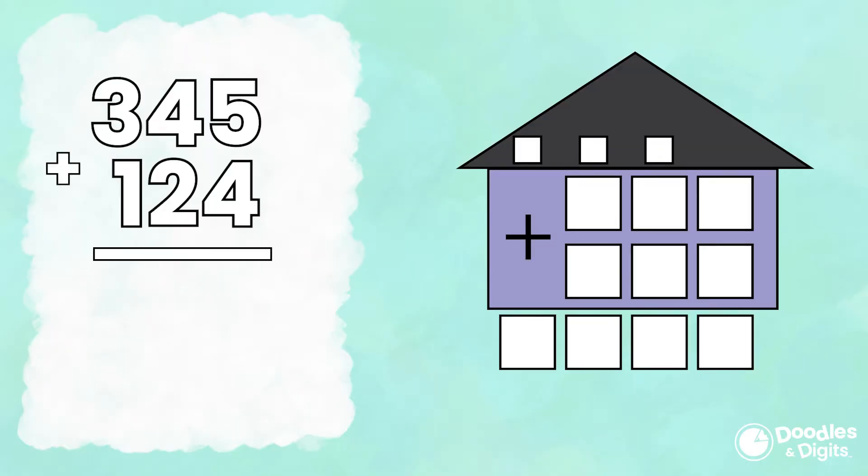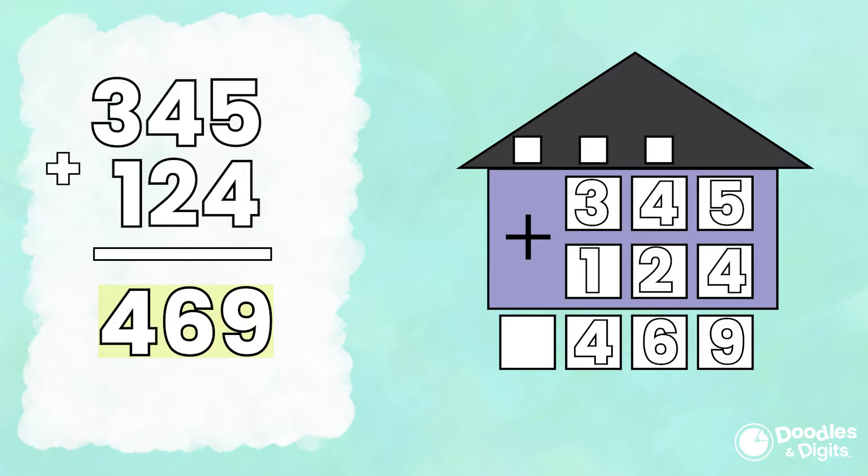Let's try a few more. 345 plus 124. We're going to put it in the chart and start in the ones place. 5 plus 4 is 9, 4 plus 2 is 6, and 3 plus 1 is 4. So our answer is 469.